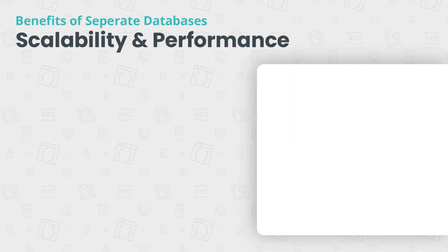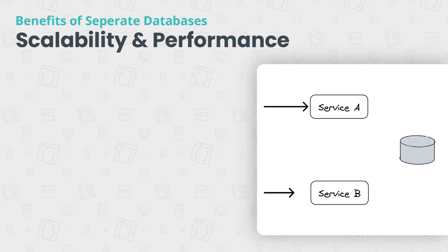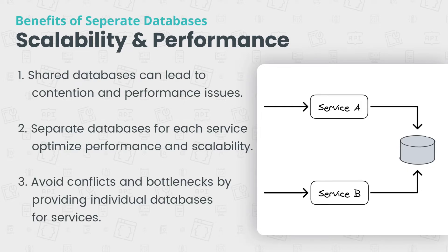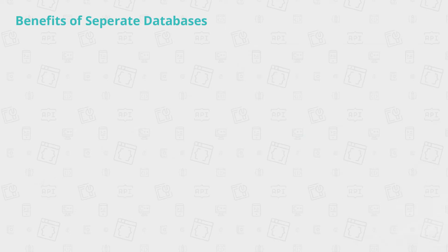In a shared database scenario, multiple services accessing the same database can lead to connection and performance issues. As the system scales and the workload increases, conflicts may arise when multiple services try to update the same data simultaneously. Each service might have different usage patterns, read-write ratios, and scalability requirements. By separating databases, we can optimize performance for each service individually, ensuring better scalability and avoiding bottlenecks.